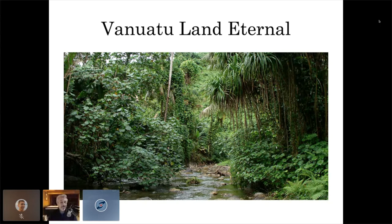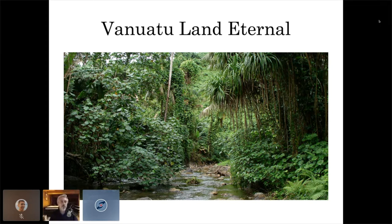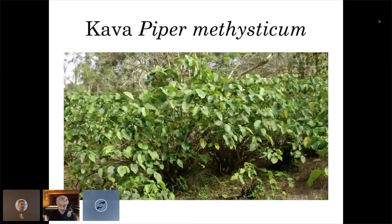This is a typical interior scene in Vanuatu — lush vegetation and a tremendous amount of pure water flowing. What's interesting about Vanuatu is that it is a calcareous plateau — calcium that has risen up tens of thousands of feet from the ocean floor. Water goes up through that and comes out of splits in the tops of hills as pure, clean, beautiful drinking water. There's a tremendous amount of fresh water in Vanuatu, which accounts for the lushness of the place.